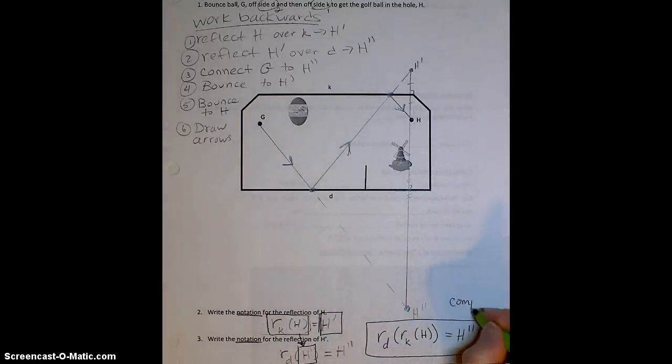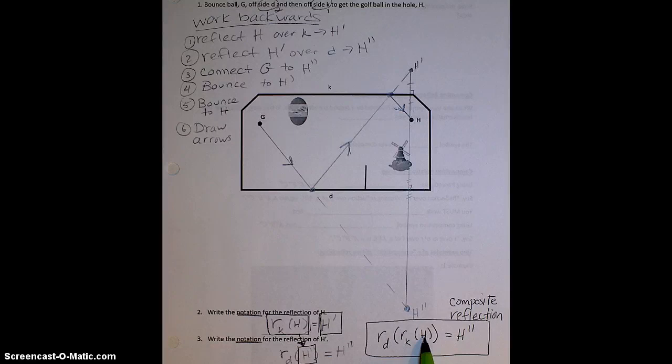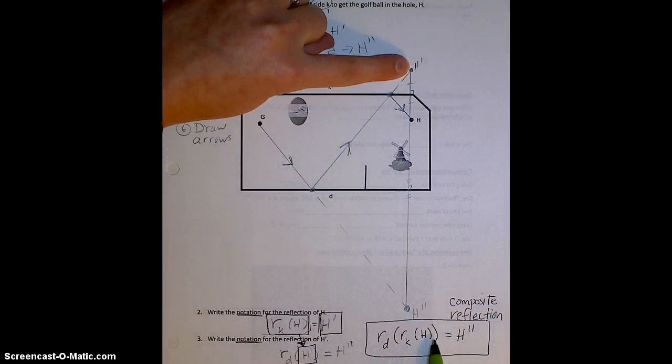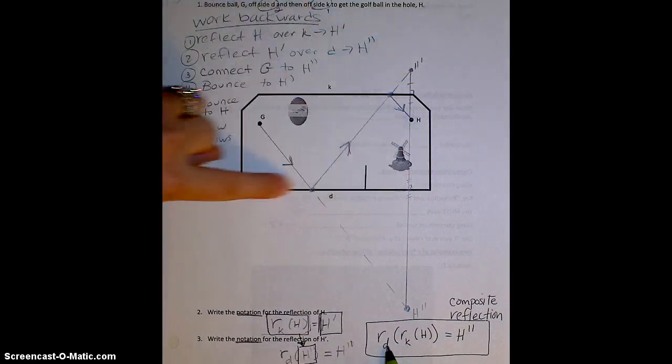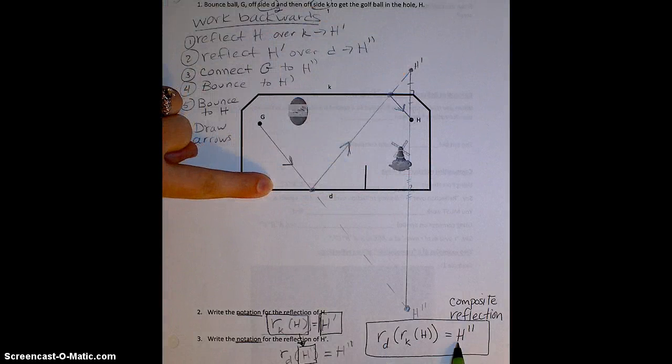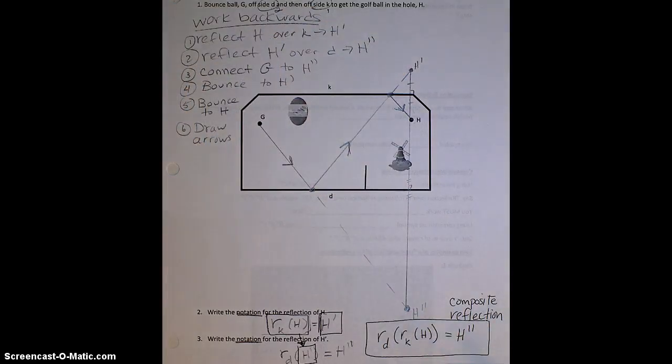This is known as a composite reflection. And basically, this means a double reflection or a reflection of another reflection. And when we read this notation, we would say, reflect the point H over the line K first. Then take that point, which we know was H prime, and reflect H prime over D to get H double prime. And that's basically what we do in these mini golf problems.